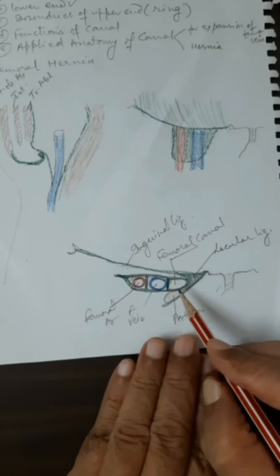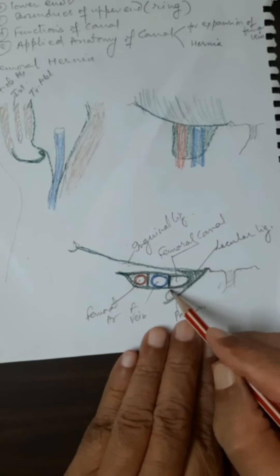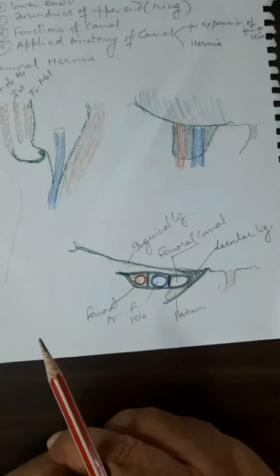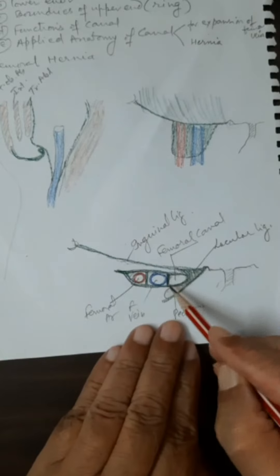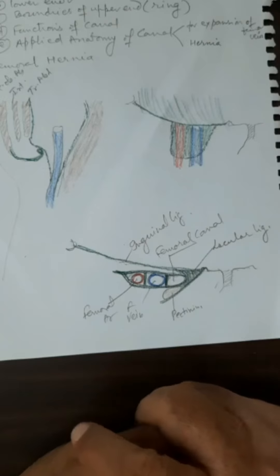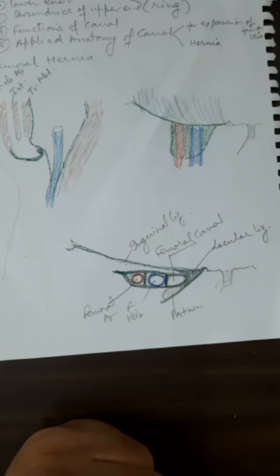Posteriorly the canal is bounded by the fascia iliaca resting on the pectineus muscle, the fascia covering that muscle. So these are the boundaries. You must realize that this is a very small canal, hardly one centimeter, and even with this small size, sometimes the contents may come out and give femoral hernia.